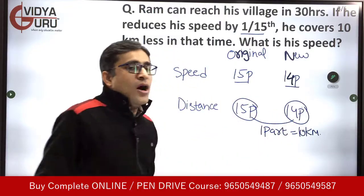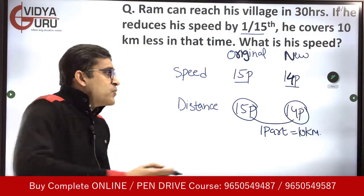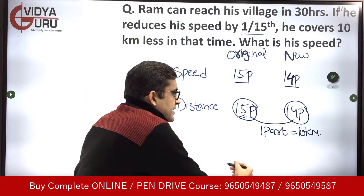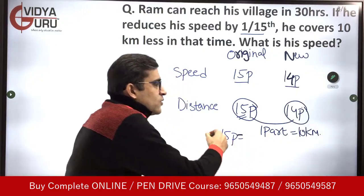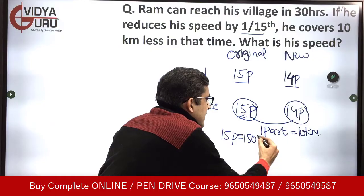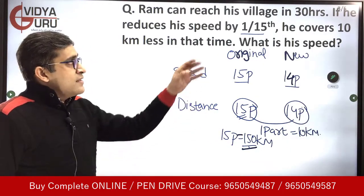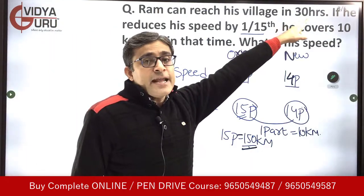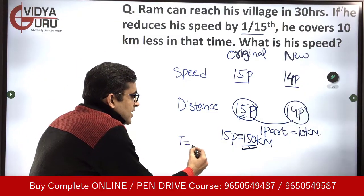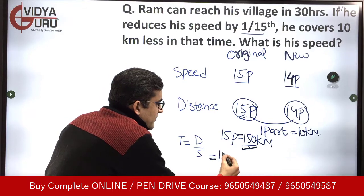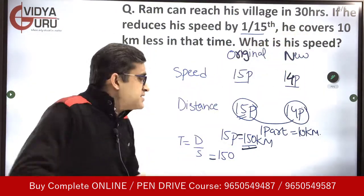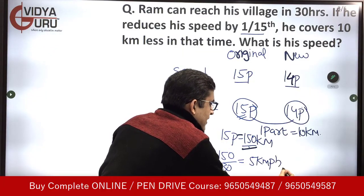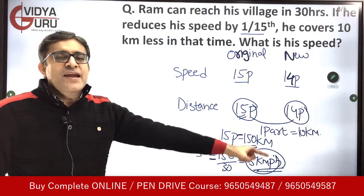So 1 part is equal to 10 kilometers. The original distance he was covering is 15 parts. Since 1 part equals 10 kilometers, 15 parts will be equal to 150 kilometers. The total distance he covers to reach his village is 150 kilometers. He takes 30 hours. Speed equals distance upon time — 150 divided by 30 — the speed turns out to be 5 kilometers per hour. That's the answer: the speed is 5 kilometers per hour.